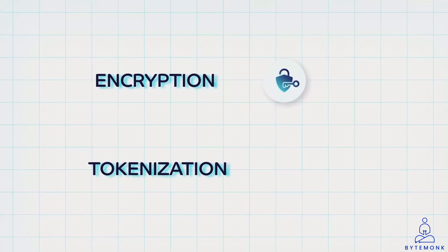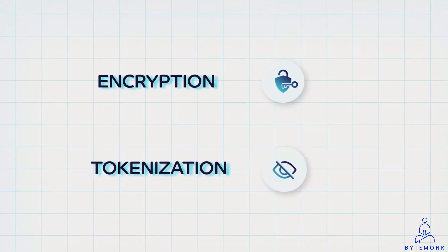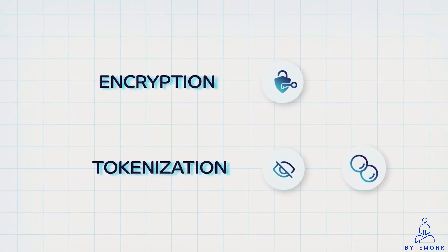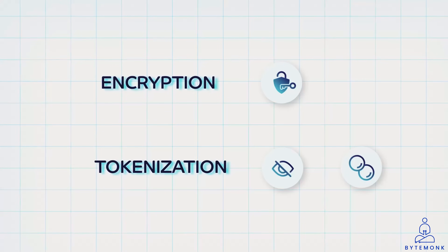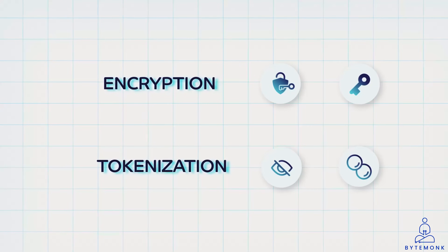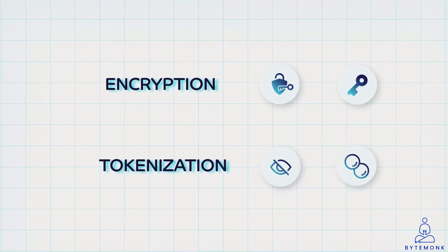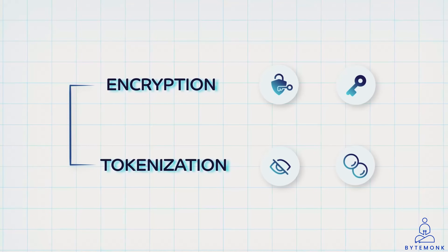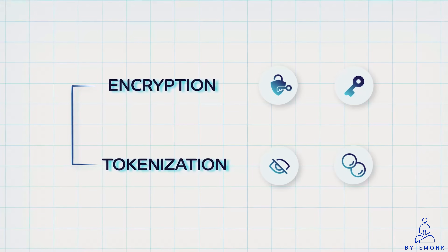With encryption, the original data is decrypted for processing once it reaches its destination. With tokenization, the original data is never stored or exposed in the first place — tokens are used for all future transactions. In the event of a data breach, encrypted data might still be vulnerable because it can be decrypted with the right key. In contrast, tokenized data is much less useful to hackers, as the actual card information is never stored. These two security measures work together to provide a robust and layered defense against unauthorized access and fraud in the digital payment ecosystem.